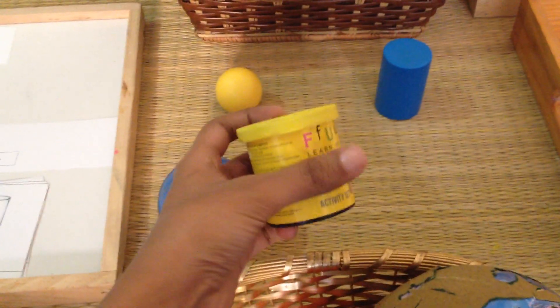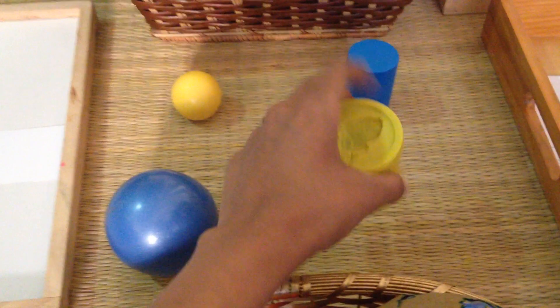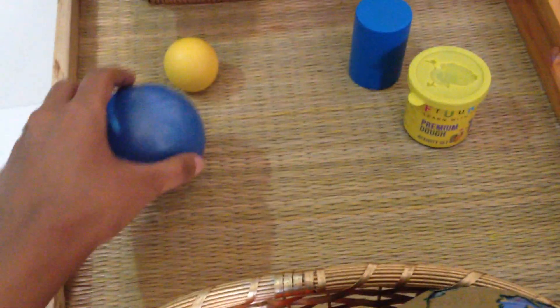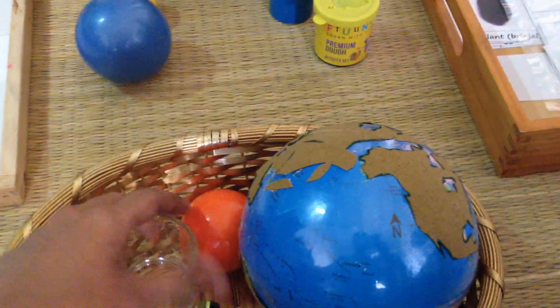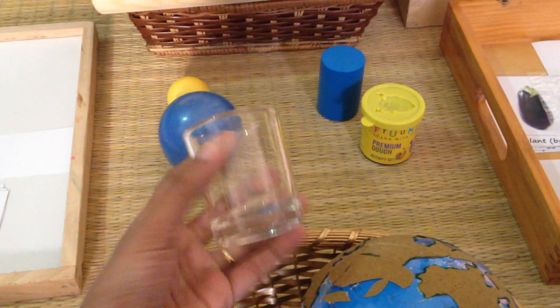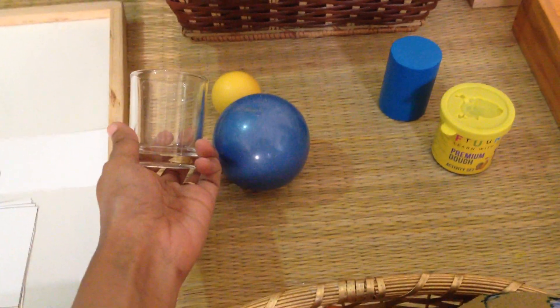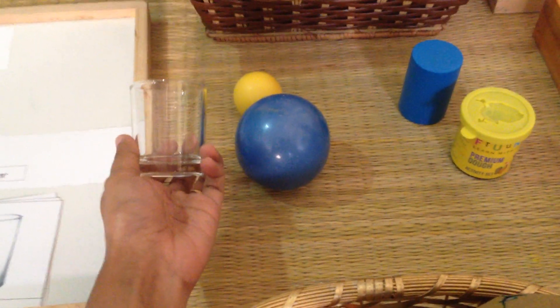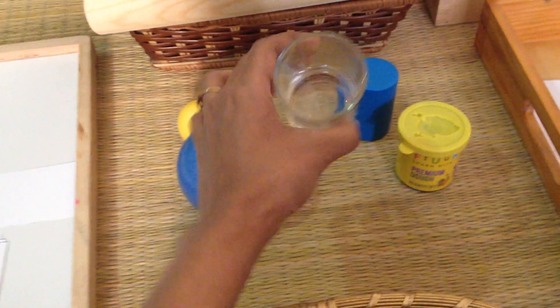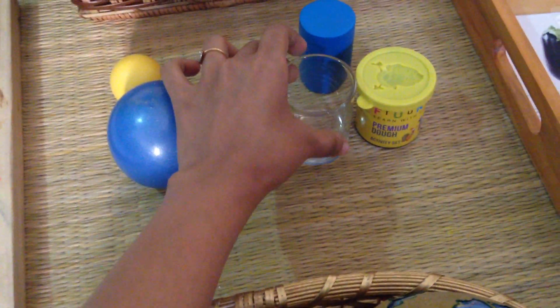This is a can. What does it look like? It looks like the cylinder. Let's keep it here. Then this one is a glass. Do you think it looks like a sphere? No, it looks like a cylinder. That's right, so keep it here.